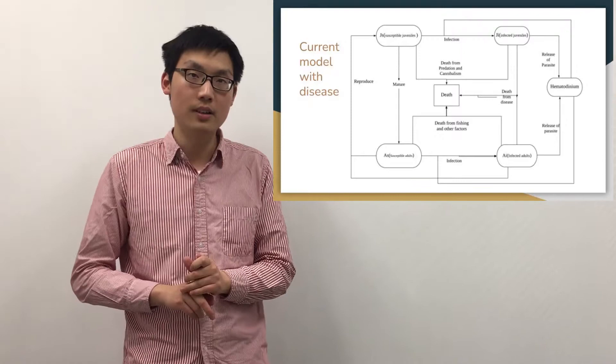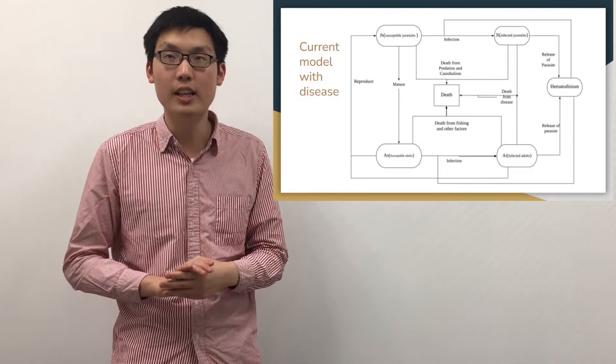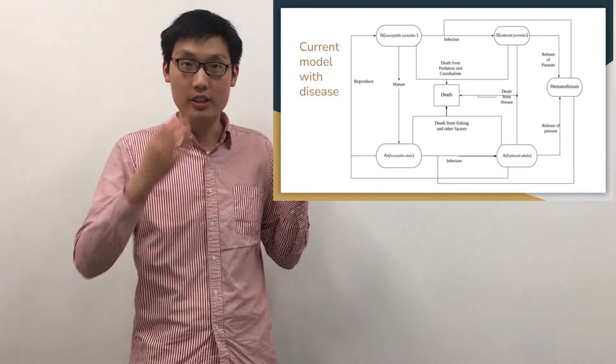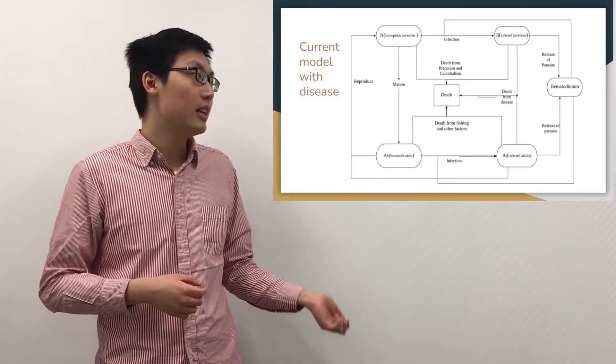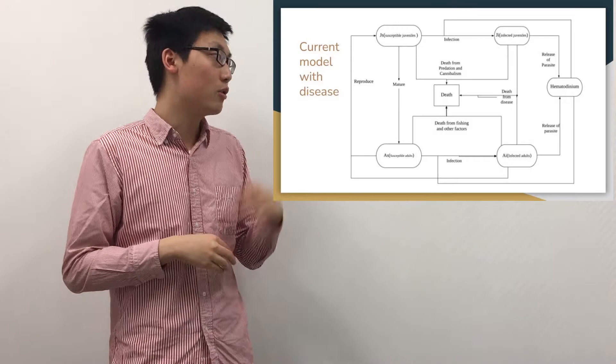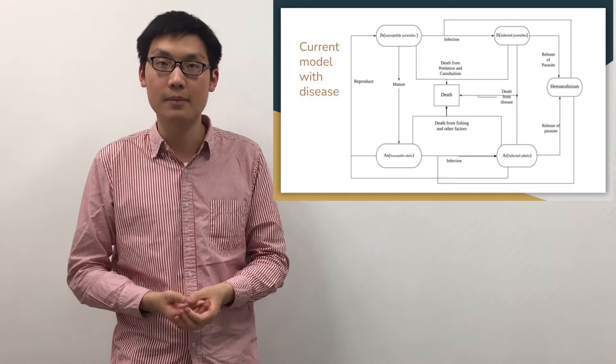Let's assume there is a very young, lucky blue crab who didn't get infected throughout its life. It would first mature and become an adult crab, then reproduce — completing a normal life cycle. However, if a crab gets infected, it would die within a period of time.